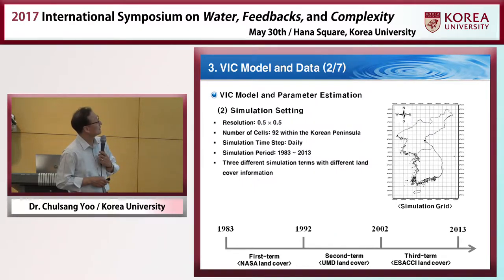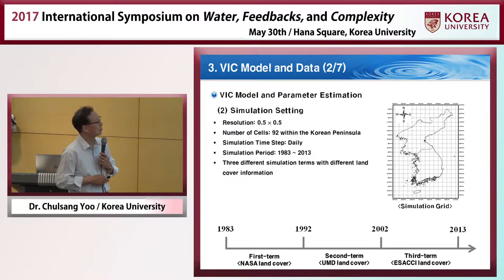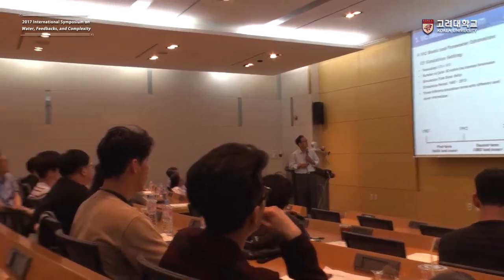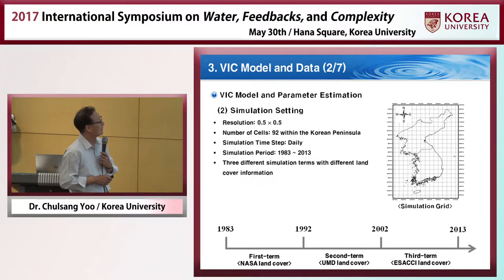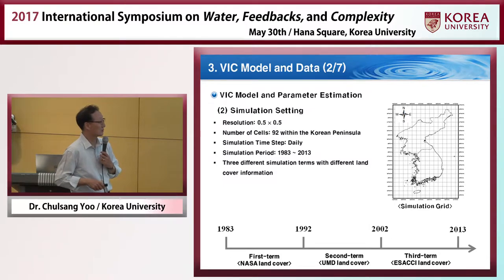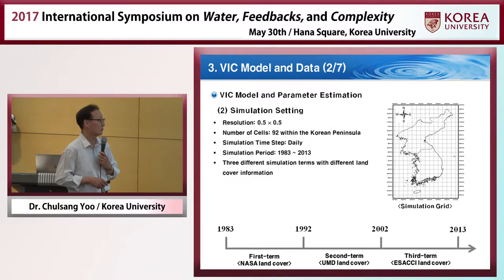We set the simulation using these conditions. The spatial resolution adopted is 0.5 by 0.5 degrees, so we have 92 cells within the Korean Peninsula. The simulation time step was set to daily. We did the simulation from 1983 to 2013 — more than 30 years. We divided this simulation period into three terms to consider land cover change, using a different land cover dataset for each period.